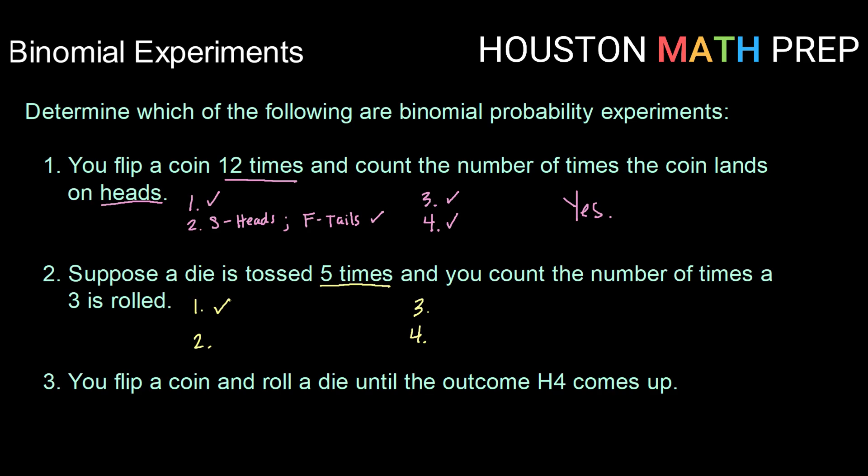Second, do we have only two possible outcomes, success and failure? This one can be a little tricky here because you might think, well, I have six things that can happen when I roll the die. However, here it's all about how you define.